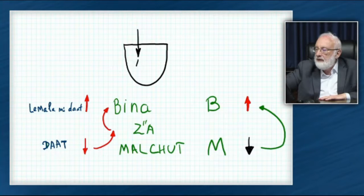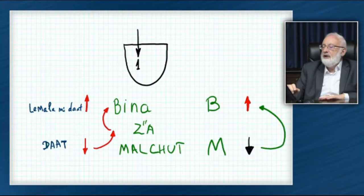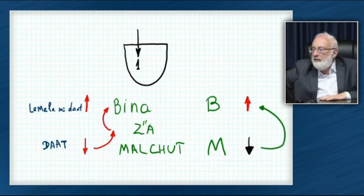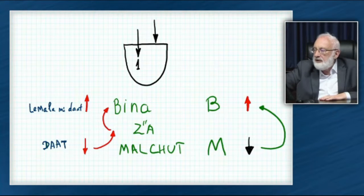This is the will to receive that used to receive. This is its initial state where it received. We don't want to receive. So, the pleasure comes, but we don't want to receive. We don't want to accept it. This is stage number two.